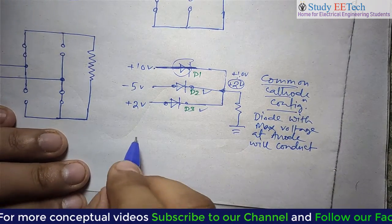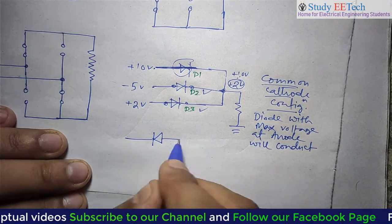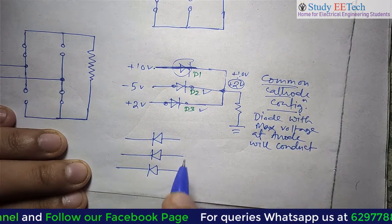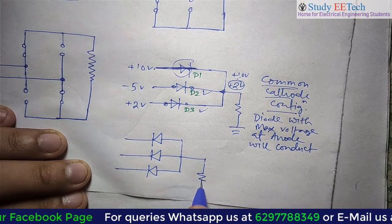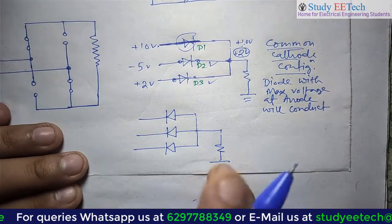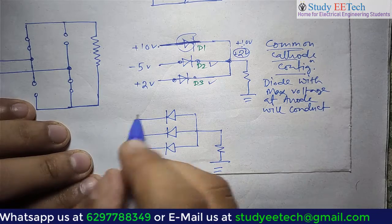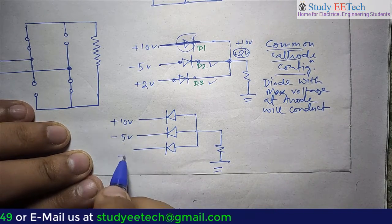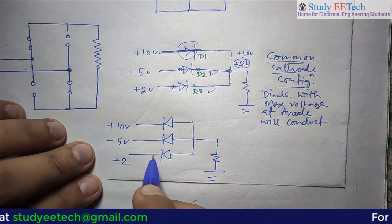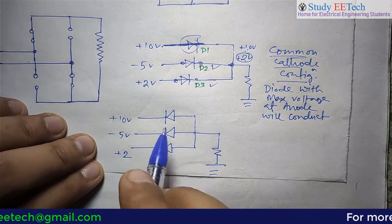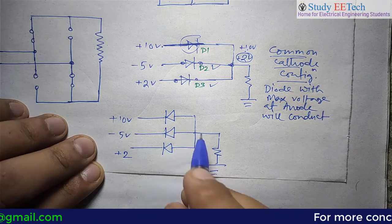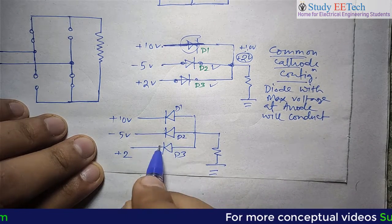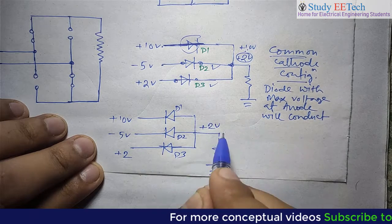Now let us take the different case — common anode configuration — same thing. Give the same voltages: plus 10 volt, minus 5 volt, plus 2 volt. Let us start from D3. If D3 is short circuit, this voltage will be plus 2 volt. And if this is plus 2 volt, with D2 having plus 2 at one side and minus 5 at the other...